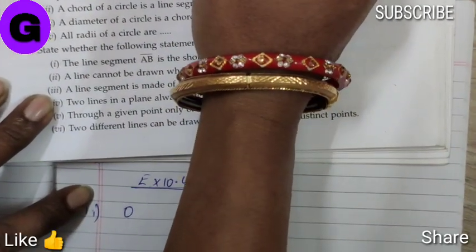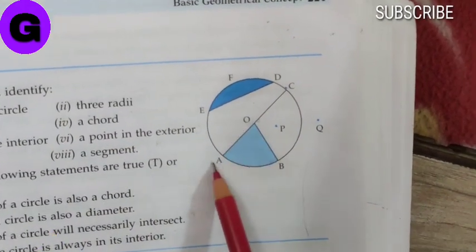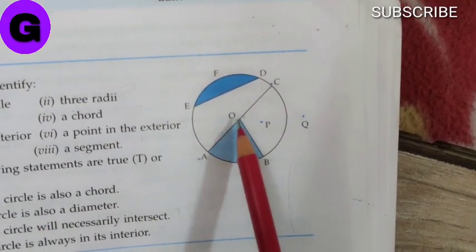Subpart 2, we have to identify the three radii. So, the three radii are OA, OB and OC.